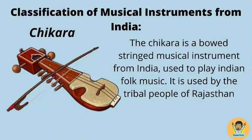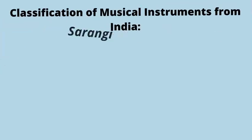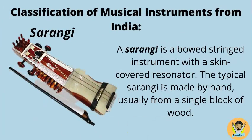The Chikara is a bowed stringed musical instrument from India used to play Indian folk music. It is used by the tribal people of Rajasthan. The Sarangi is a bowed stringed instrument with a skin-covered resonator. The typical Sarangi is made by hand, usually from a single block of wood.